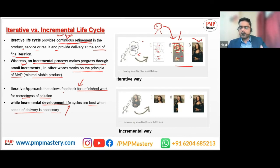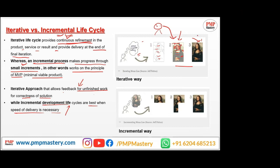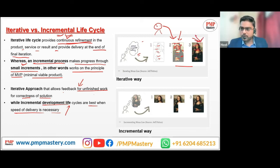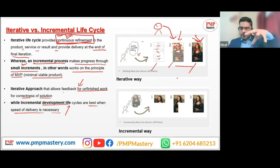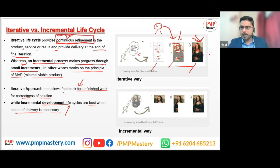Once the customer says it's fine, you put the final coat over the whole picture. Continuous refinement means you are not delivering anything in between — you are just getting feedback, and based on that feedback you are refining until you get the correct product. Finally, you have the correct final product.